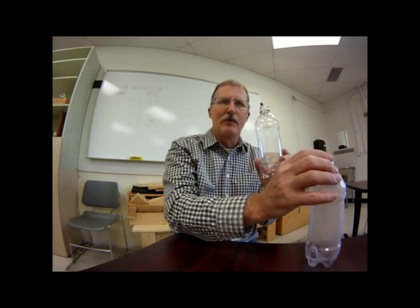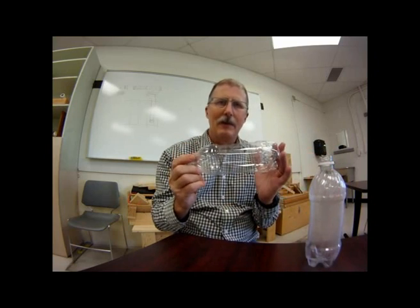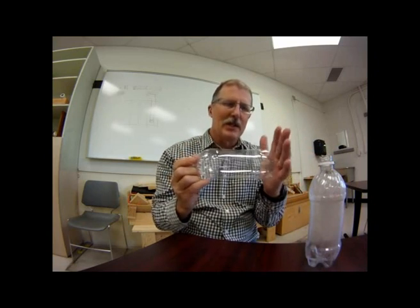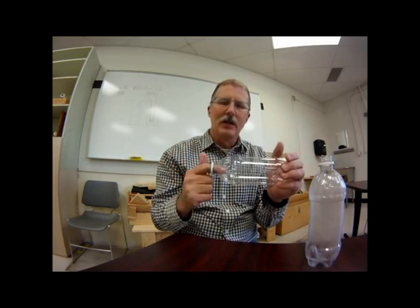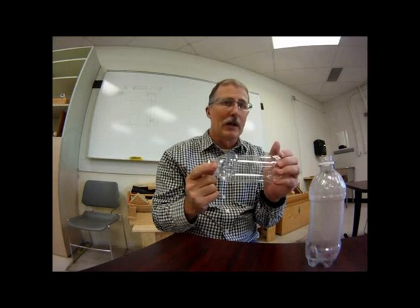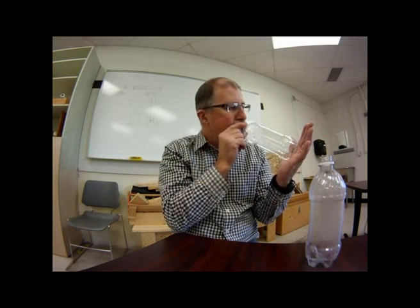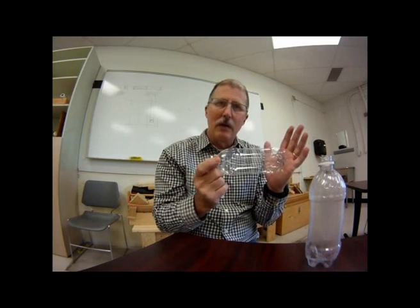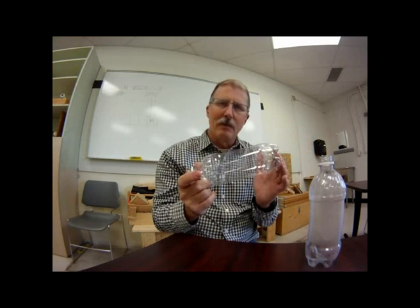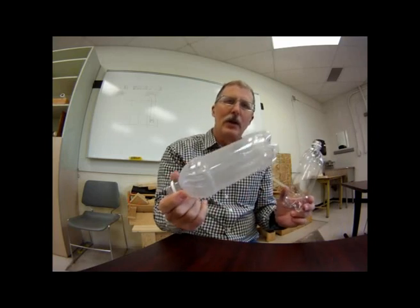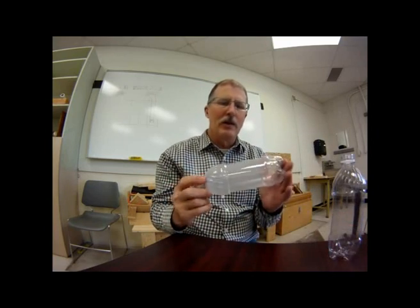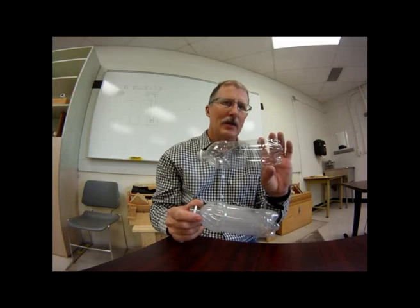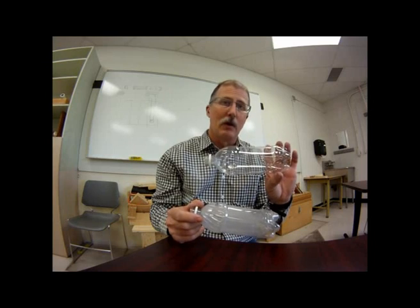Whereas if this was my rim joist — outside of my rim joist nicely tight and sealed, inside, even if there's a hole there, air can't go in. I could think of this in terms of my rim joist, I could think of this in terms of my windows. Anywhere where I'm going to compartmentalize is going to limit the condensation in the wall.